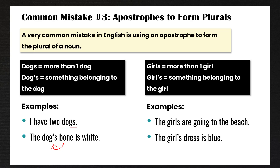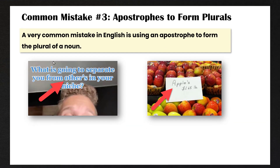For example: 'the girls are going to the beach' means two or more girls are going to the beach. 'The girl's dress is blue' — the apostrophe S means that the dress belongs to the girl, to one girl. I saw this on TikTok as well: 'What is going to separate you from others in your niche?' — he wrote others with an apostrophe S and that is incorrect. He's talking about other people, so he should write others with no apostrophe.